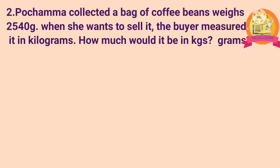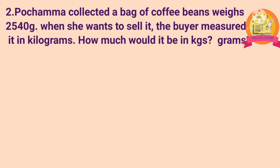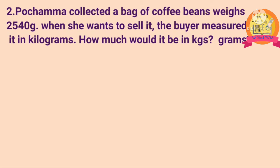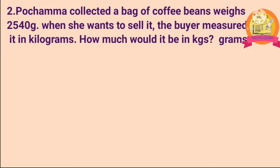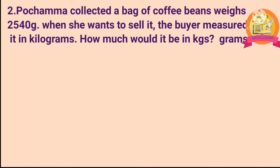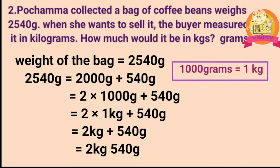Second problem: Poochamma collected a bag of coffee beans weighing 2540 g. When she wants to sell it, the buyer measured it in kilograms. How much would it be in kg? Solution: weight of the bag is 2540 g. As we know that 1000 g is equal to 1 kg. After converting 2540 g into kilograms and grams, we get 2 kg 540 g.